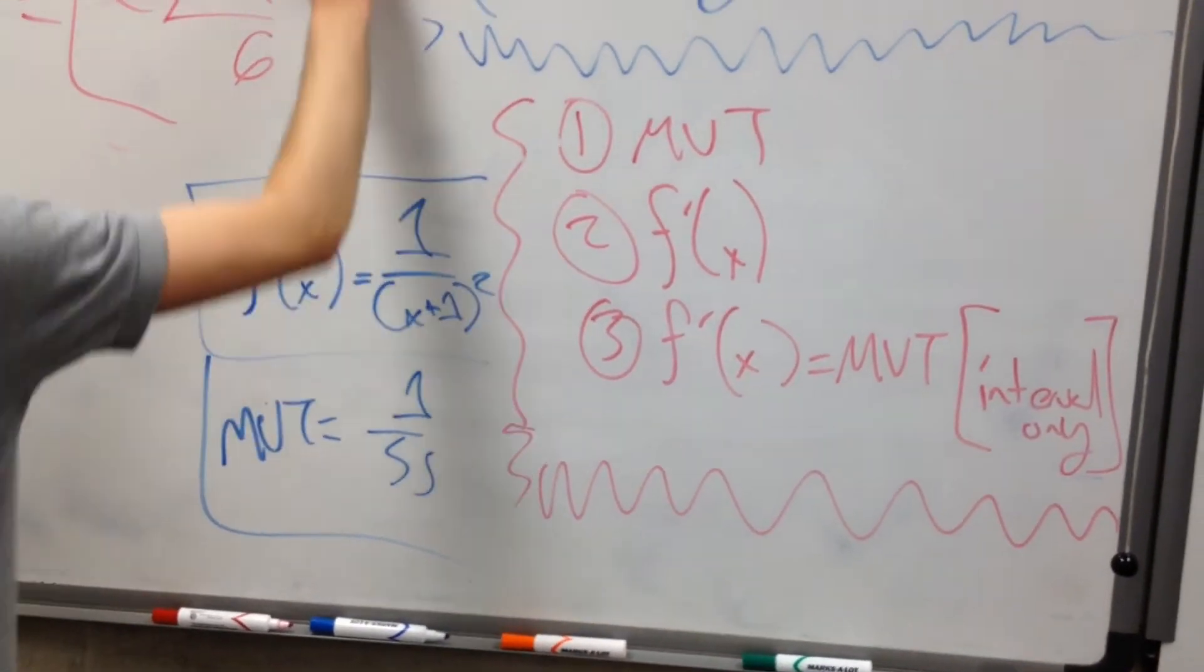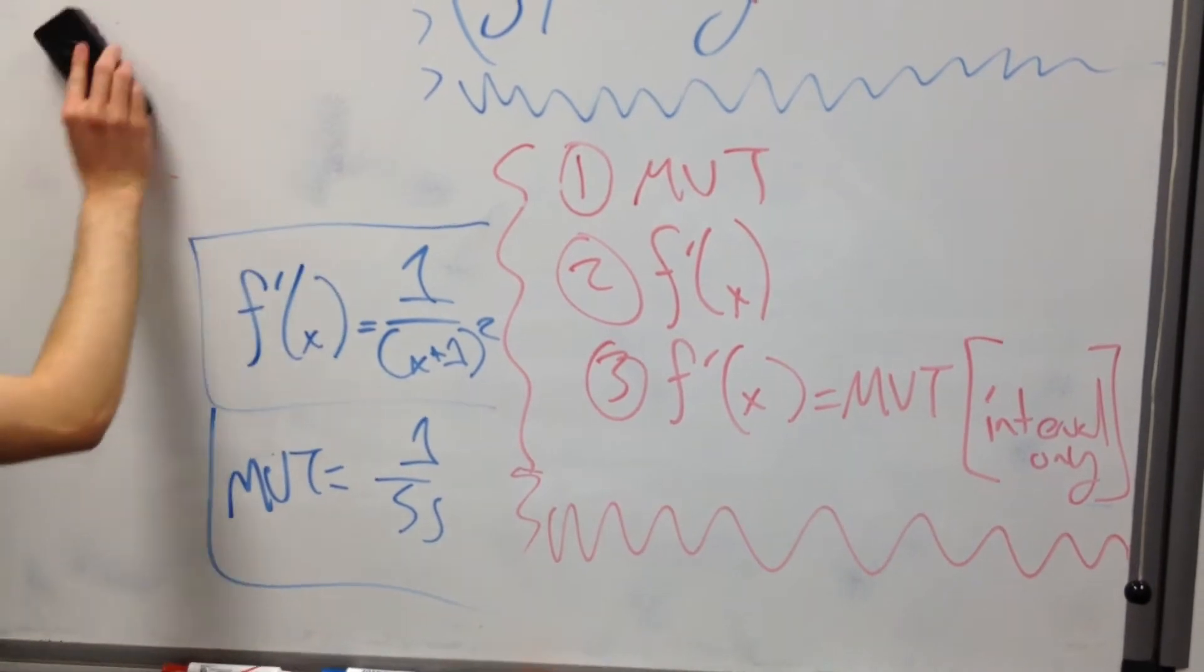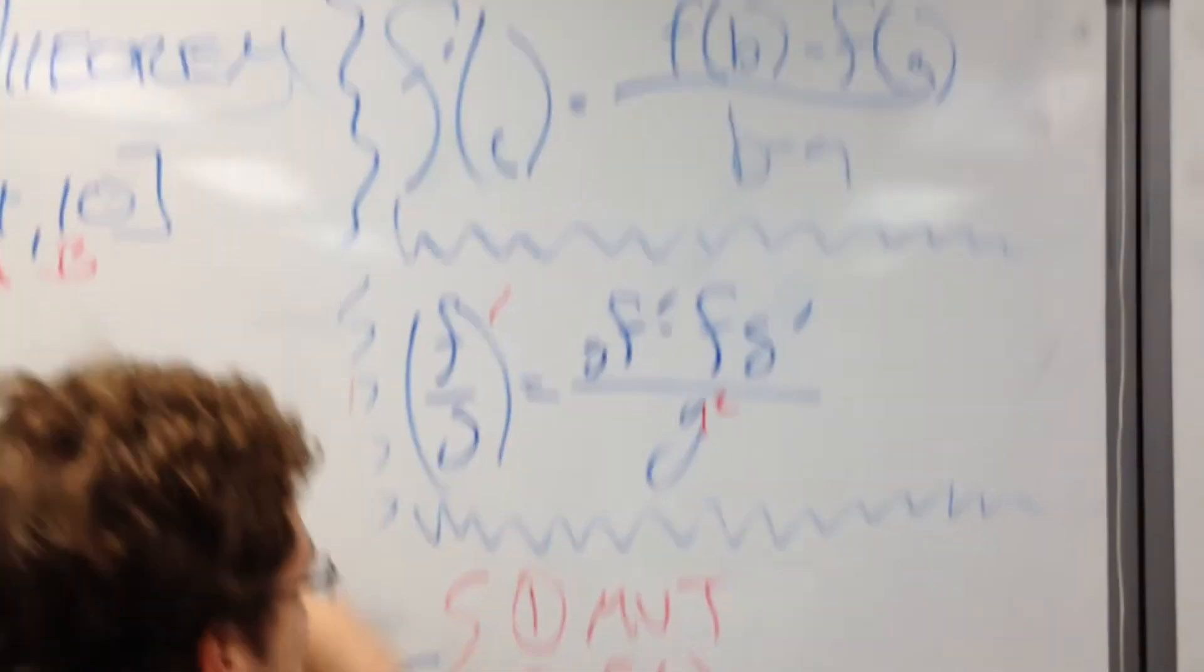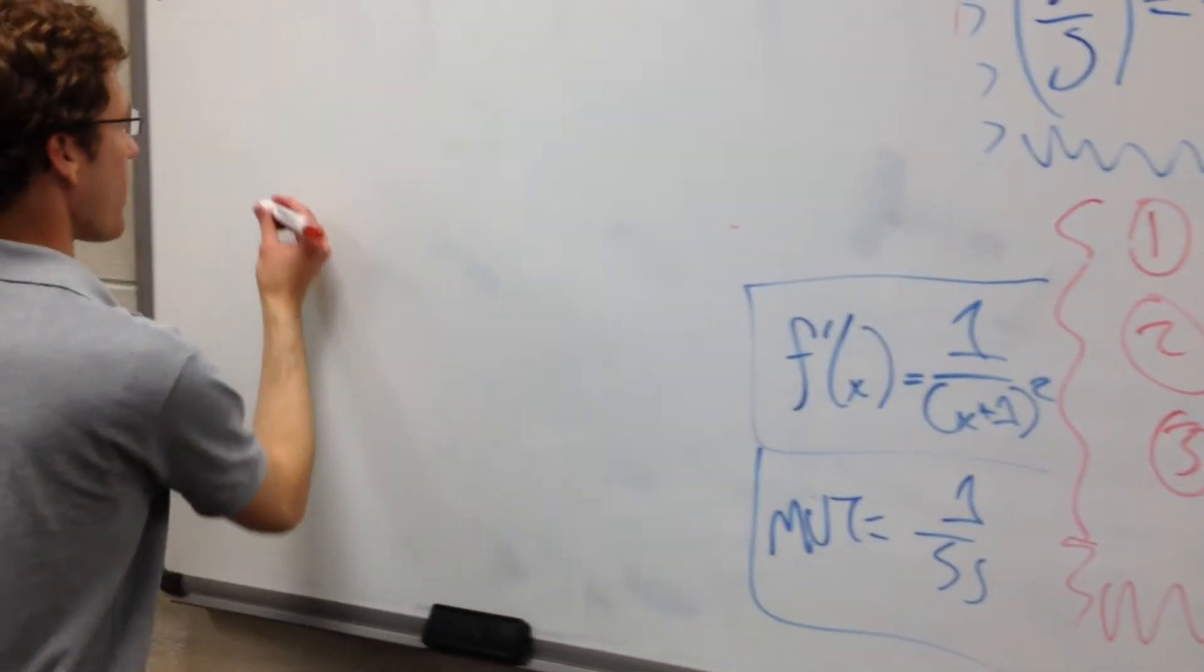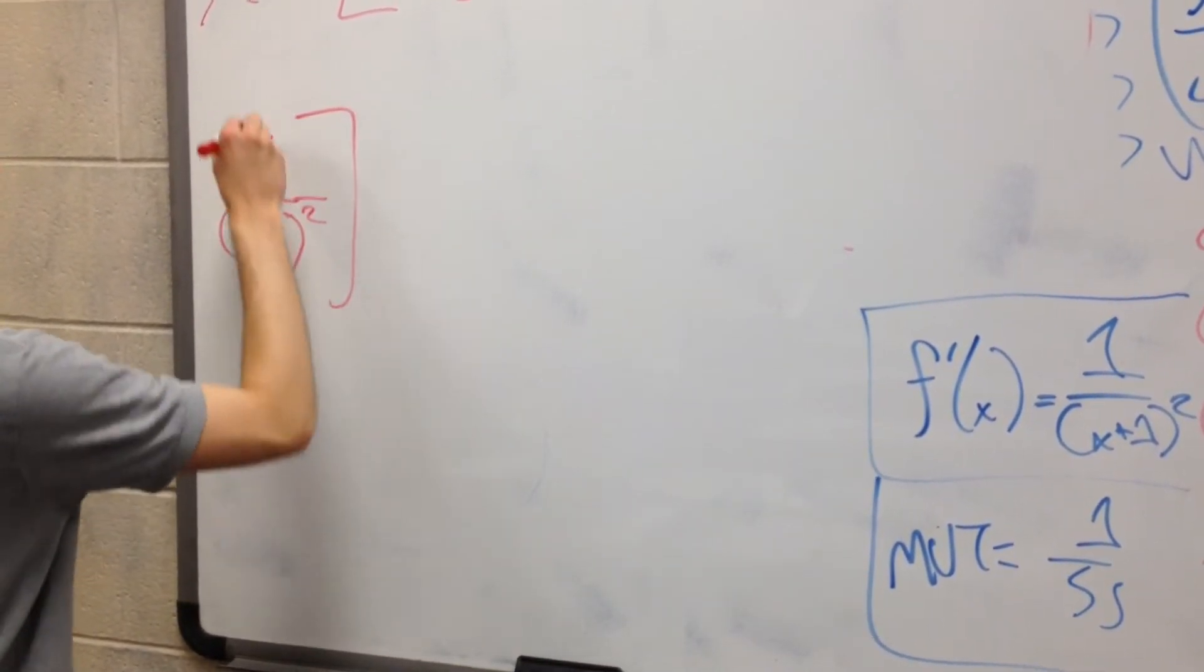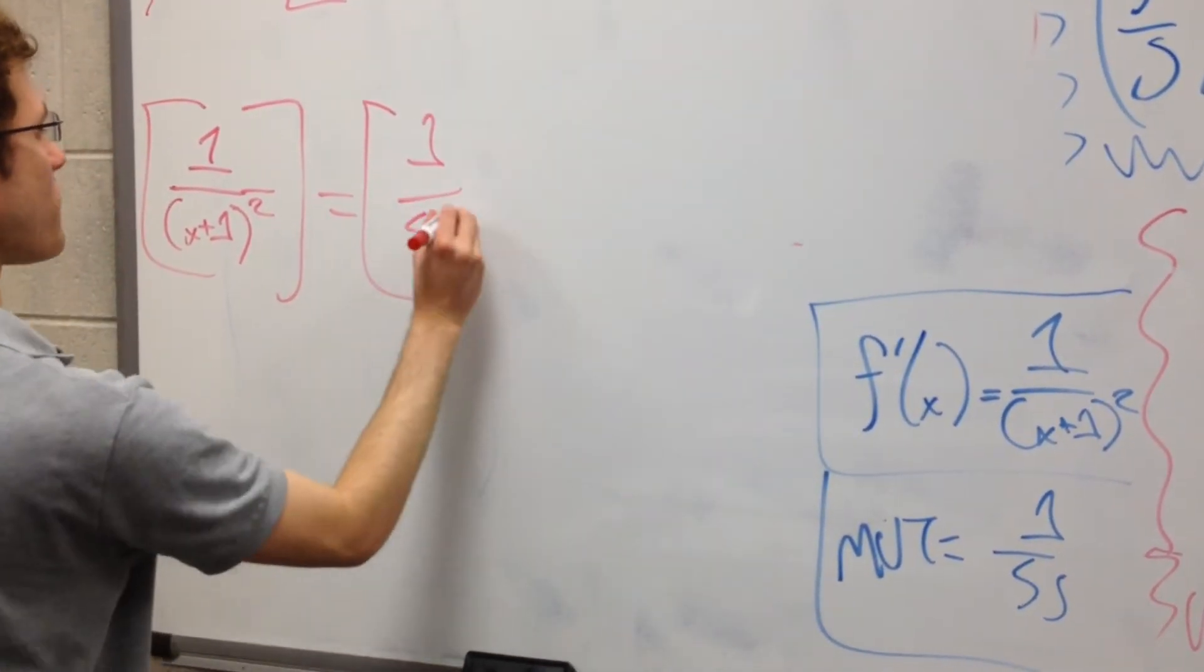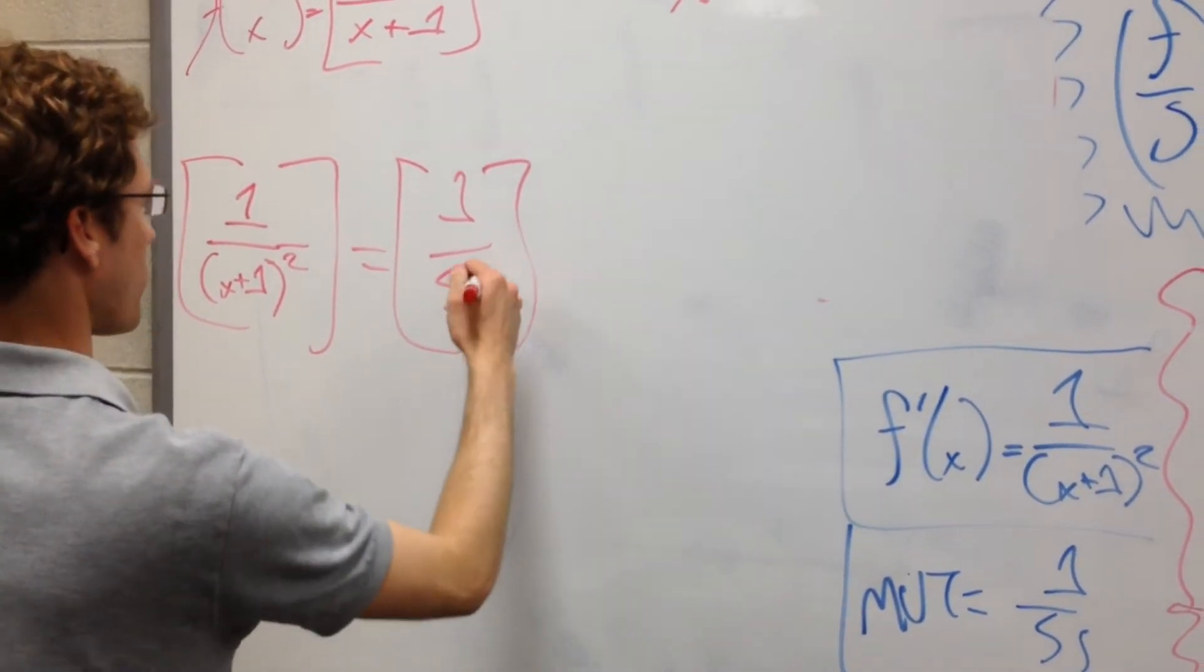Now, we can get rid of all of this and get on to the last step, which is to set f prime equal to what you got when you did the mean value theorem formula. When you put everything in here. So, we're going to set these two things equal to one another. So, let's go ahead and do that. That's 1 over x plus 1 squared. All of this is equal to 1 over 55. Cool. Let's make it look like a 5. 57. All right. 55.